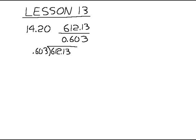We need to move that decimal place over three spots — one, two, three. On the inside, we move it over three as well, which means we'll add another zero. So I'll rewrite this as 603 on the outside and 612130 on the inside.